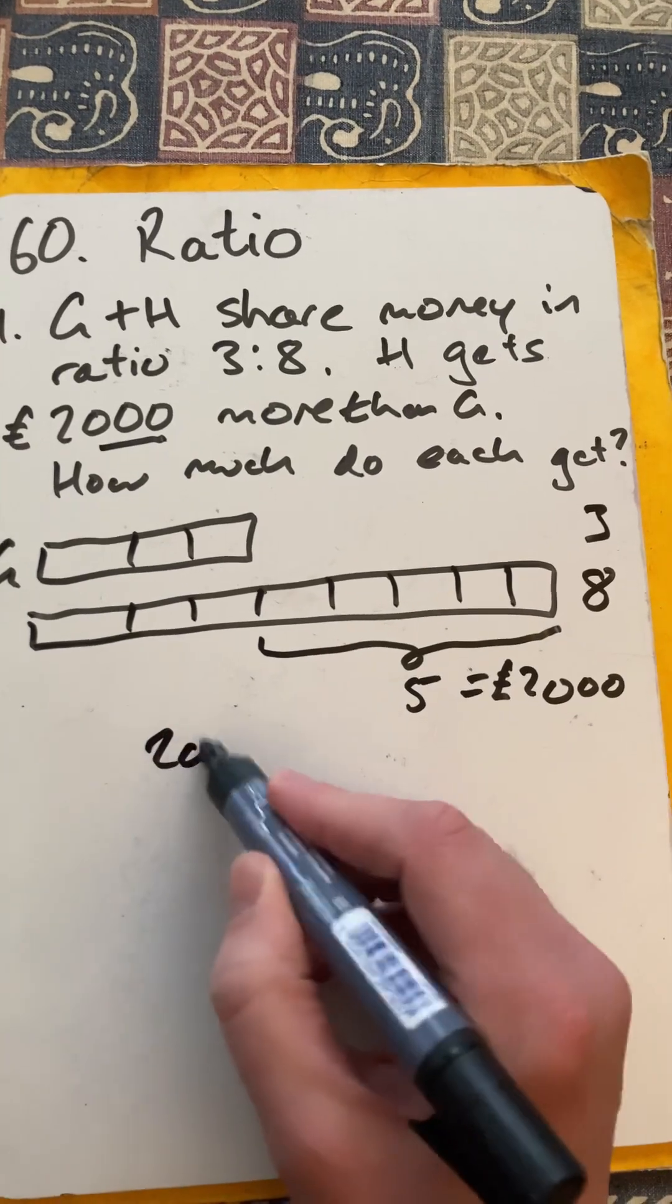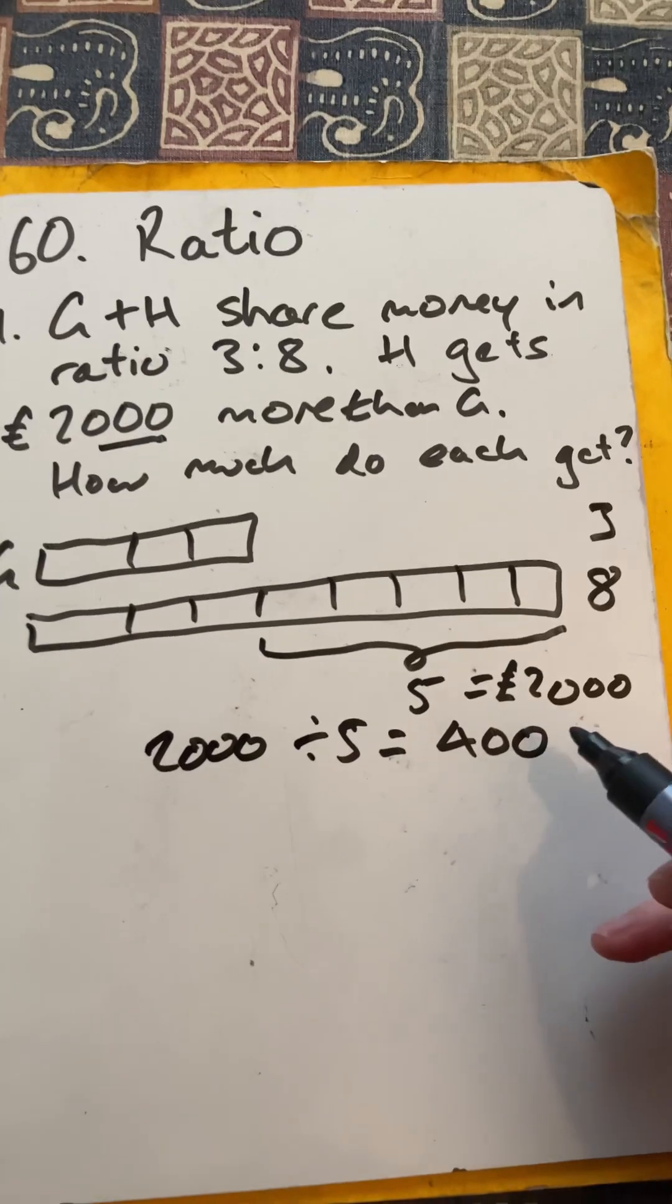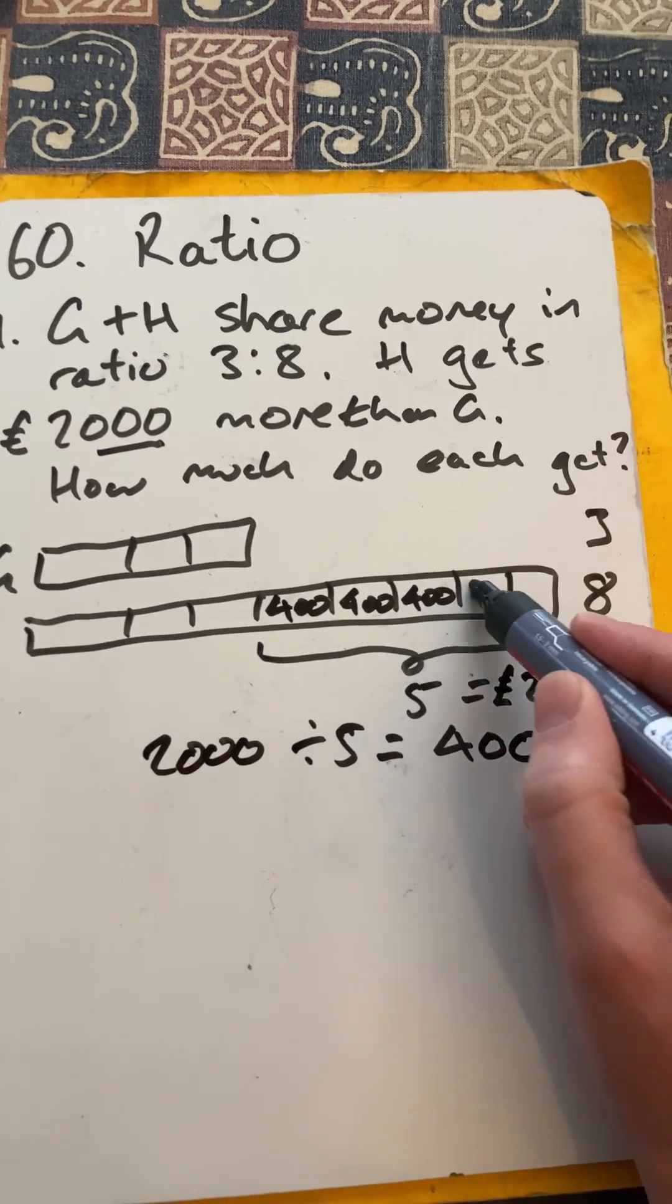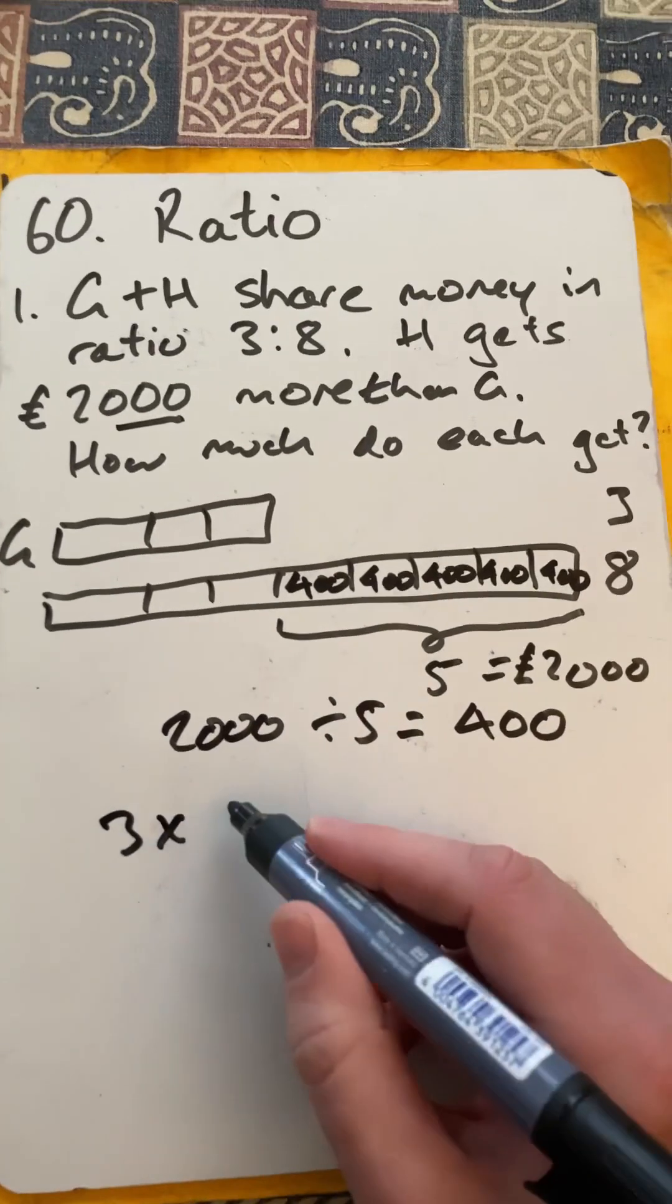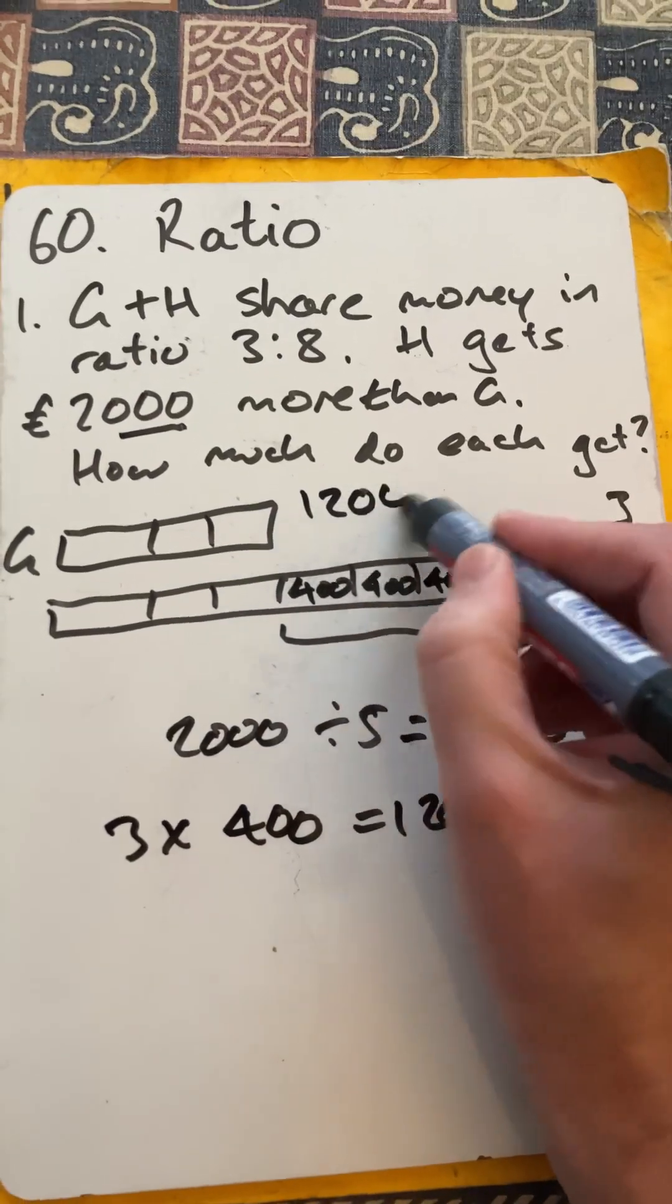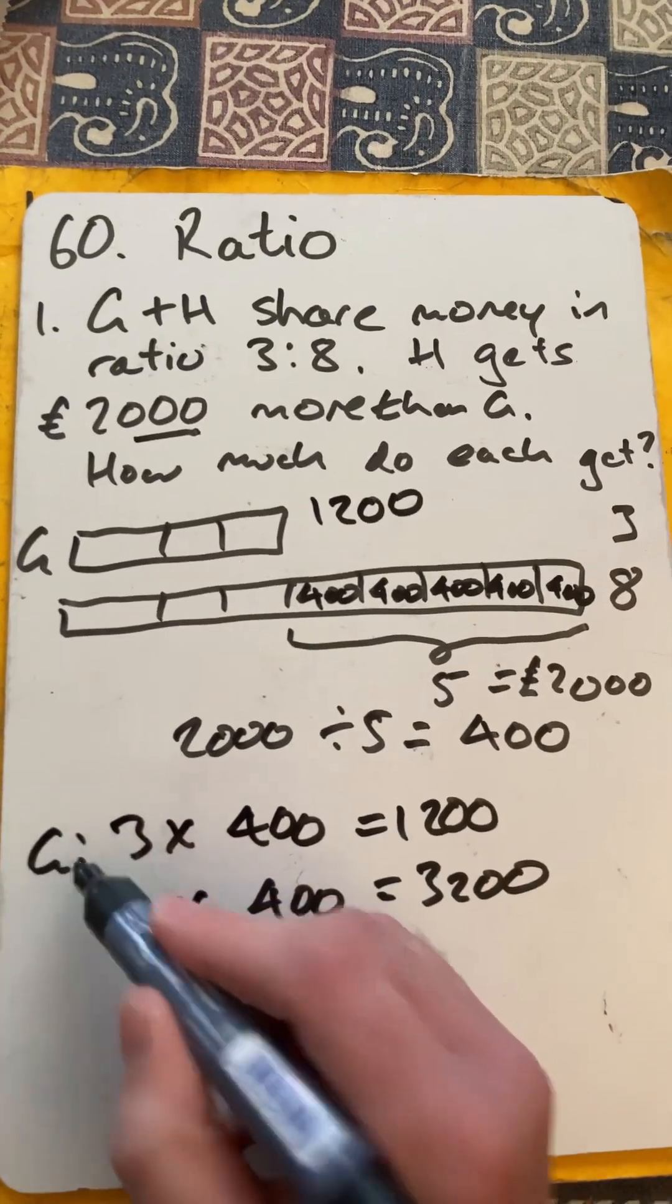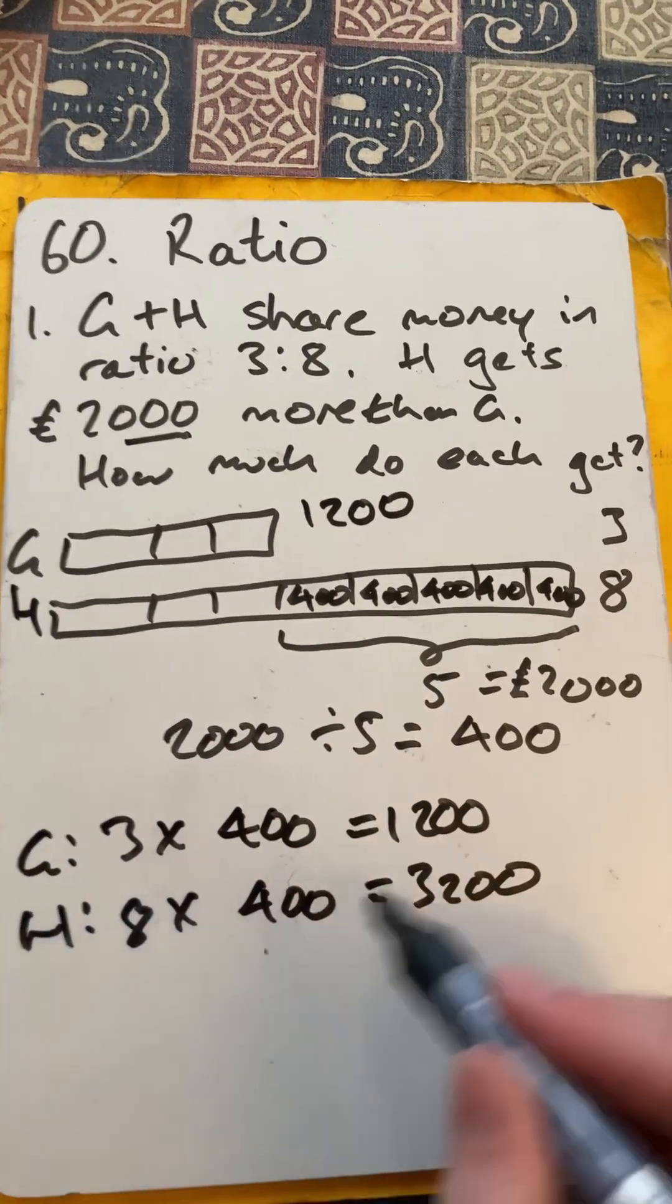So we've got to do £2,000 divided by 5 to get one part, which would be £400. So each of these is £400. Excuse the scribbles there, but each of those is £400. So how much do they each get? Well, 3 times £400 is £1,200. That'll be here. And 8 times £400 will be £3,200. So G will get £1,200, and H will get £3,200.